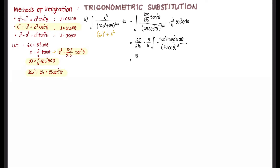Collecting constants: (125/216) × (5/6) = 625/1296. We then cancel 125 from numerator and denominator, and cancel sec² θ with sec³ θ leaving one sec θ in the denominator. The constant simplifies to 5/1296, giving us: (5/1296) ∫ tan³ θ / sec θ dθ.